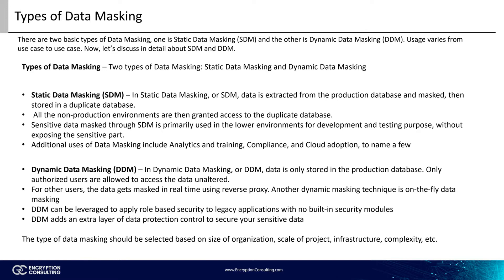Generally, there are two types of data masking: static data masking, or SDM, and dynamic data masking, or DDM. In the case of SDM, the real data is stored in the production database, unaltered, and the masked data is stored in a separate database — let's call it a non-production database. The non-prod environments are granted access to this non-prod database, and only the production environment gets access to the production database. Data is fetched from the production database, then masked and inserted into the non-production database.